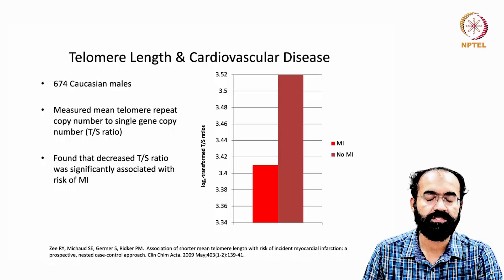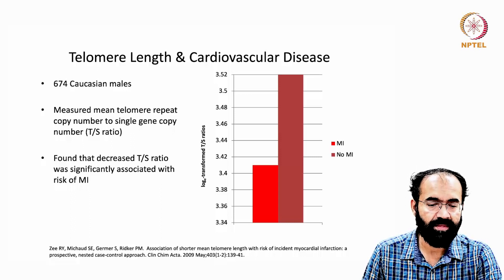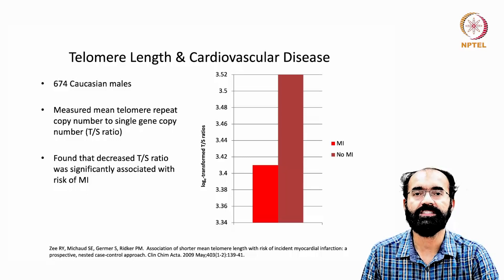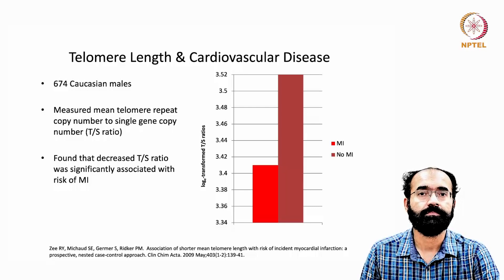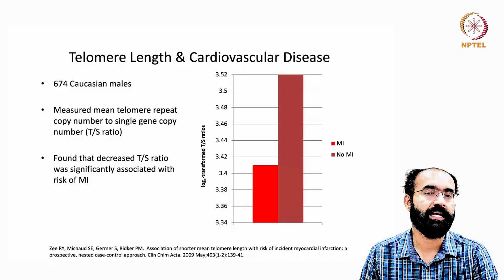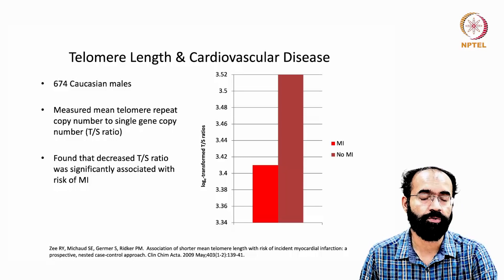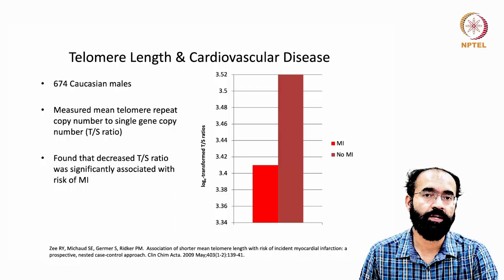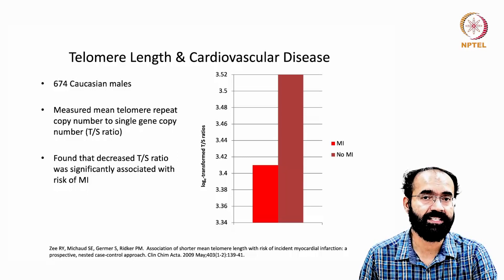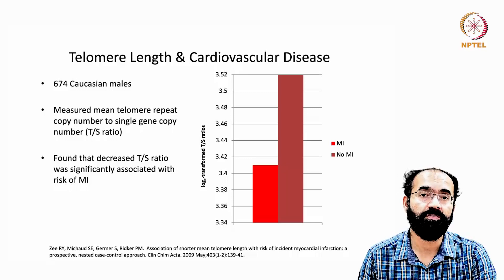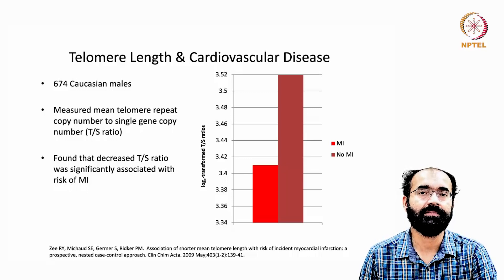They studied around 674 Caucasian males and measured the mean telomere repeat copy number to a single gene copy number — the T/S ratio. We know that around 11 KB telomere length will be there per chromosome on average. So 11,000 divided by T2AG3, which is six bases, gives the total number of telomere repeats. For convenience, let us approximate it as around 1000.